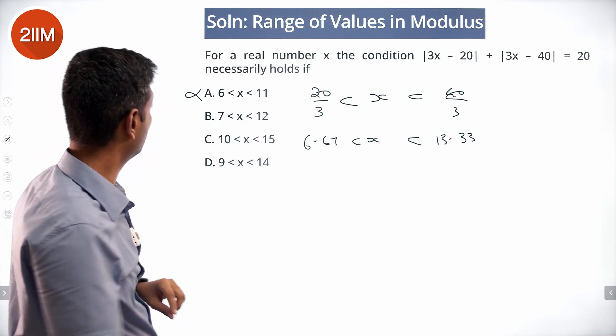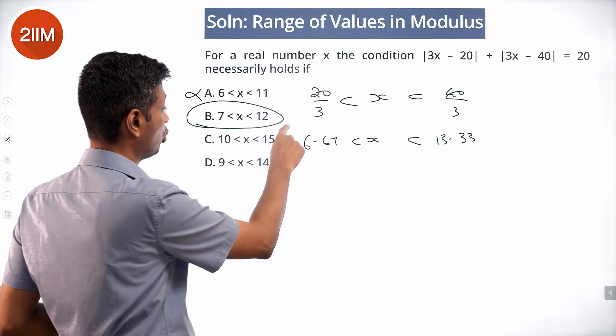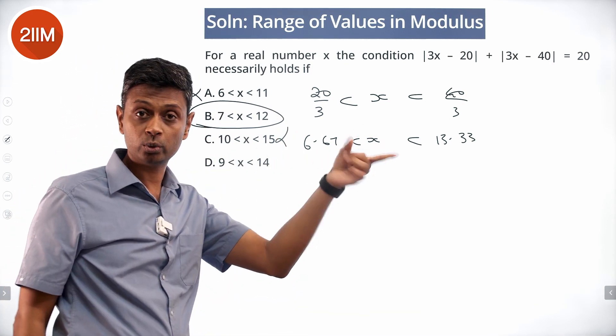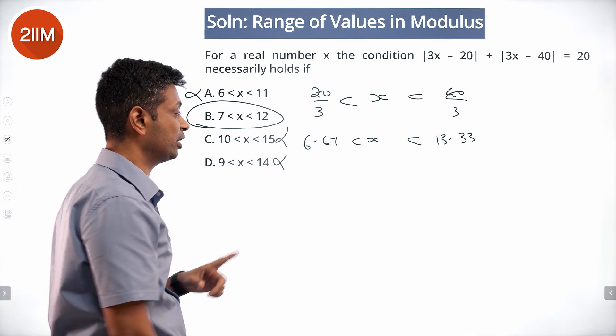7 less than x less than 12, this could work. 10 less than x less than 15 won't work, x could be 14.2, it won't work. 9 less than x less than 14 won't work, x could be 13.9, won't work.